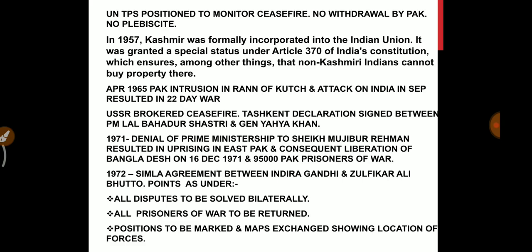In April 1965, Pakistan's intrusion in the Rann of Kutch and its attack on India in September resulted in a 22-day war. The USSR brokered a ceasefire, and the Tashkent Declaration was signed between Prime Minister Lal Bahadur Shastri and General Yahya Khan.